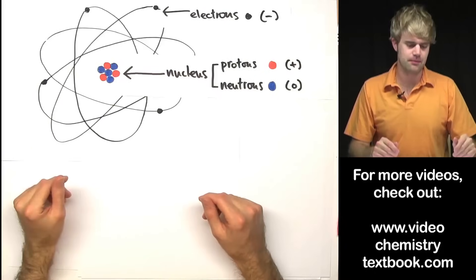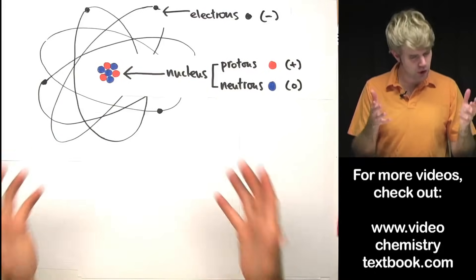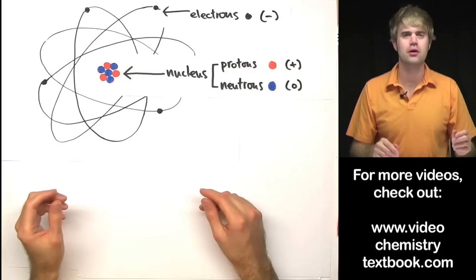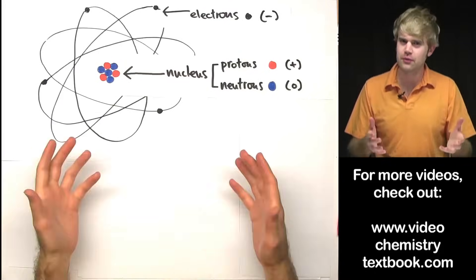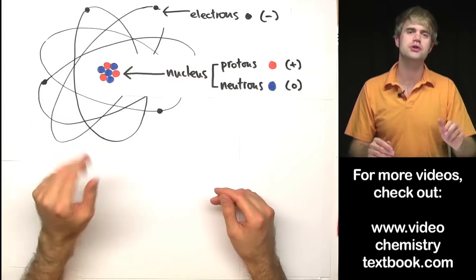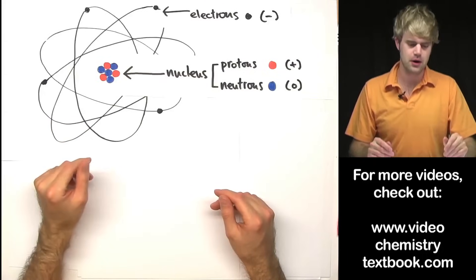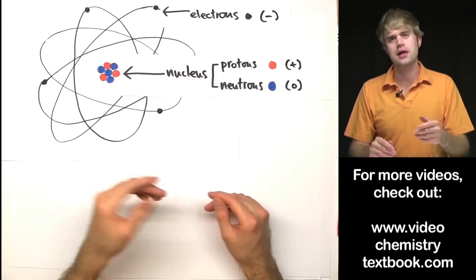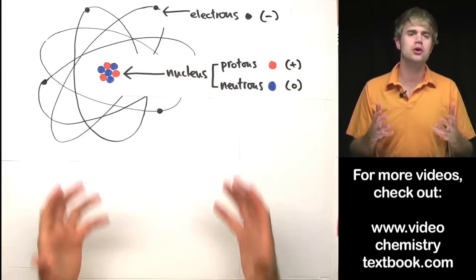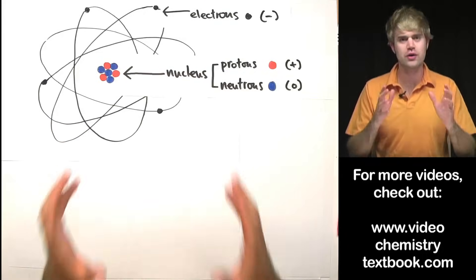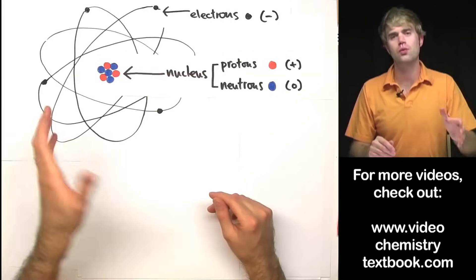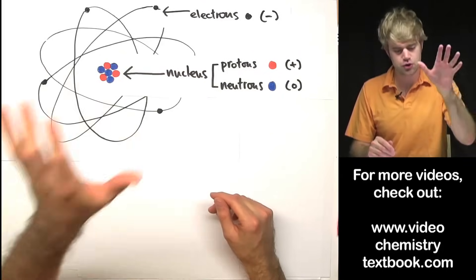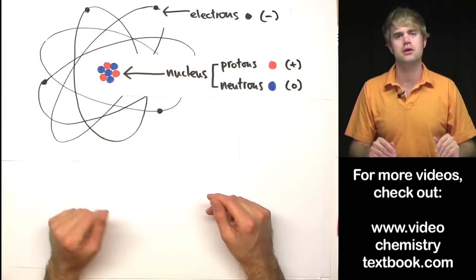Here's a diagram of an atom. It's not perfectly accurate, but for what we need right now, it's going to do just fine. So in this lesson, we're going to look at characteristics that we can use to describe atoms like this one.